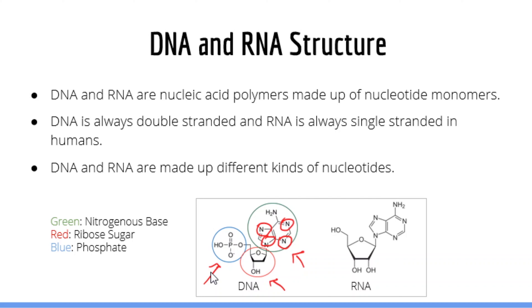This is an RNA structure — it's missing its phosphate group but we can still highlight the ribose and the nitrogenous base. Another important difference between DNA and RNA is that RNA has an oxygen and hydrogen pair of atoms at that position, which is absent in the DNA molecule. That is why DNA is called deoxyribonucleic acid — it is not oxygenated, it lacks an oxygen atom.